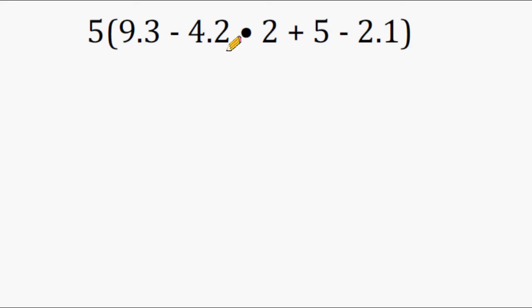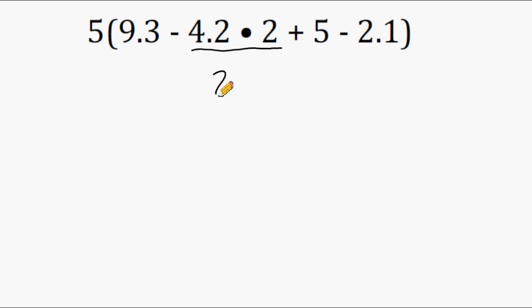We only have one multiplication symbol inside, so we have to start with 4.2 times 2. When you are multiplying something by 2, you are really just doubling that number. So we can double the 4 and double the 0.2, and that gives us 8.4. That step was just mental math.